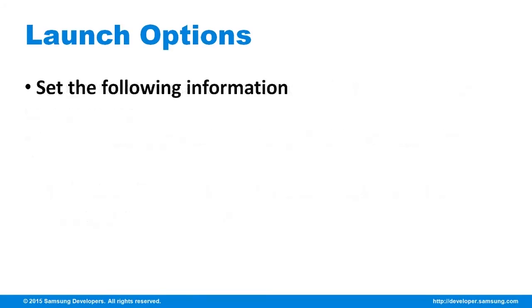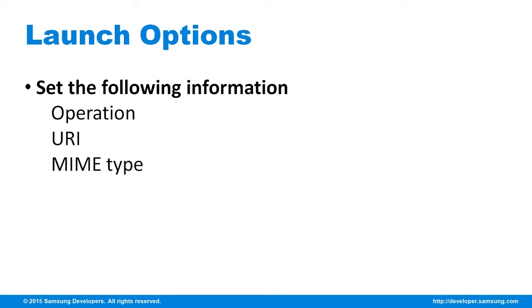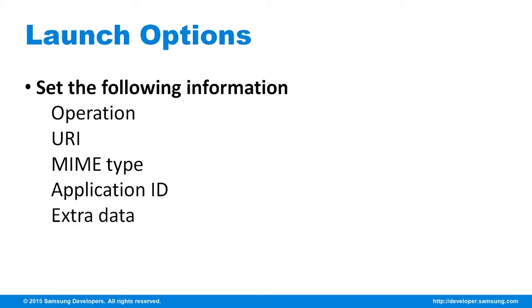To help the application handle the callback, you can set the following information. Operation is the actions to be performed. URI is the data itself to be performed on. MIME type is a specific type of URI. App ID is the ID of the application to be launched. And extra data provides extra information for the launch request and its result. Operation is mandatory information. The rest depends on the type of launch you would prefer for your application.